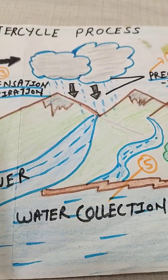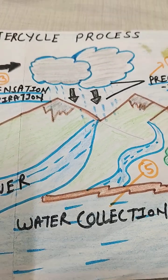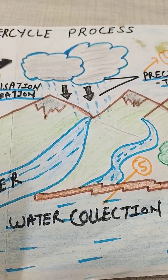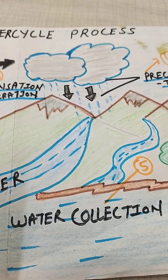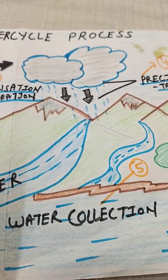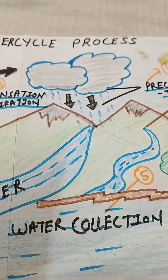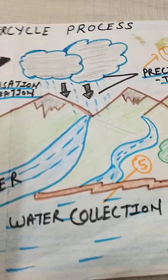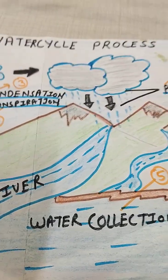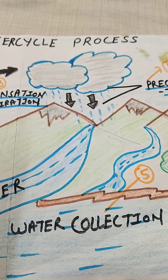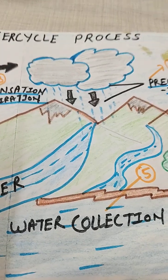Water collection means the rainwater flows into rivers, lakes, and oceans again. This is called water collection. The whole process then starts again and again — this is called the water cycle.